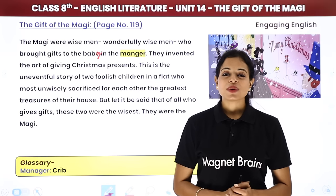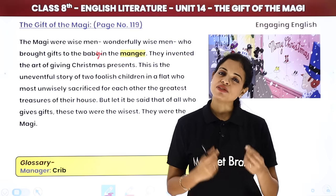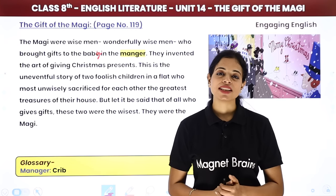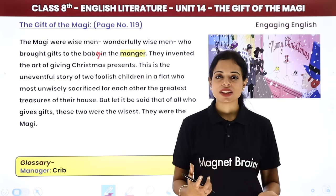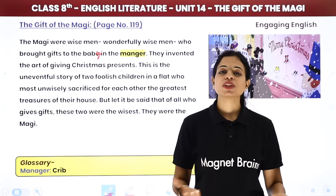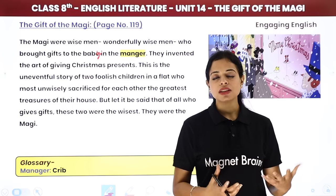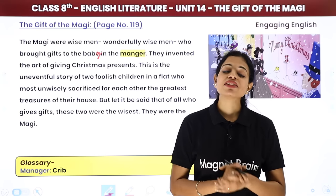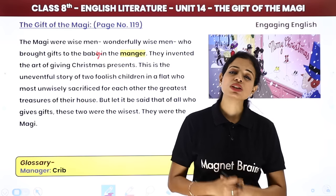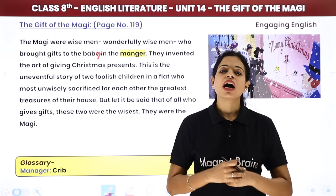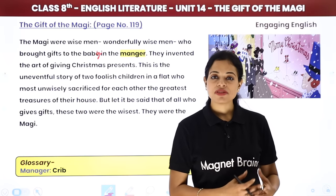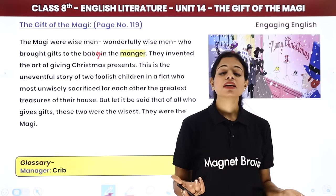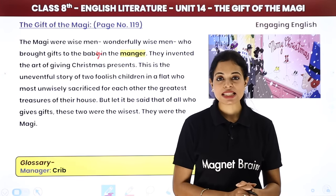Jim and Della loved each other so much. Unke paas sirf doh prized possessions thi - Della with her beautiful hair, and Jim with that gold watch. Lekin ek dusre ko khush karne ke liye, they just sold these things. Ab un dono ke gifts hain, lekin jo purpose ke liye woh laye the, woh purpose toh unhone sacrifice kar diya. Would you call them foolish people, or would you call them wise? They loved each other and they were ready to sacrifice the most important thing that they had. So yes, you can call them foolish people, or you can call them the most wise people on earth.